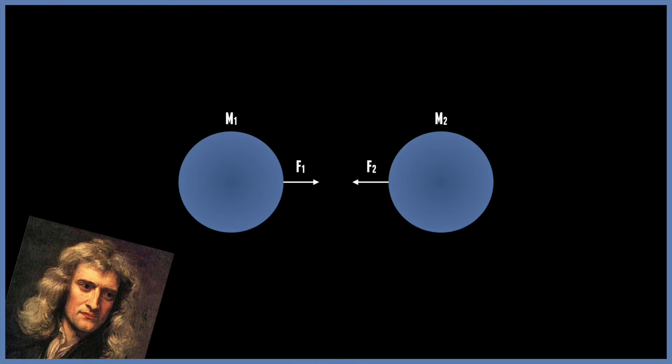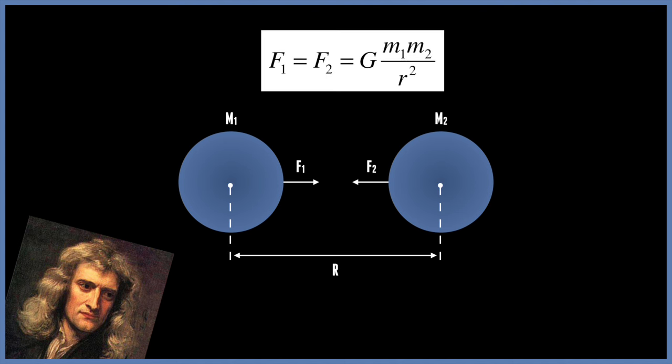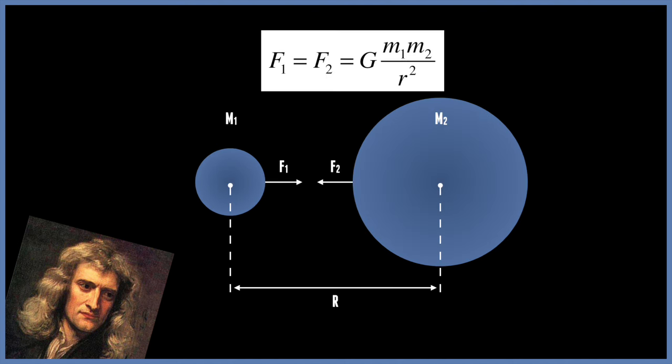He basically said that any two objects in the universe exert a force of attraction on each other. And this is due to the relationship on the mass of the two objects and the distance between them. The greater the mass of the two objects, and the shorter the distance between them, they will exert a stronger gravitational force on each other. And this can be multiplied to have several objects, so it can get very complex very quickly.